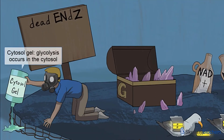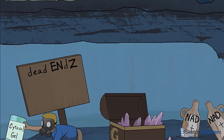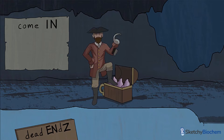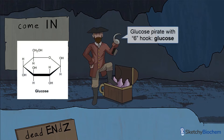Glycolysis occurs in the cytosol, and to help you remember, we've included a cast member pouring cytosol gel into the water. Glucose crosses the cell membrane via GLUT membrane proteins. Our six-buttoned robot pirate with his foot on the treasure chest represents glucose. From here on out, any pirate with six buttons signifies a six-carbon molecule — six buttons, six carbons — just like six-carbon glucose.